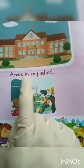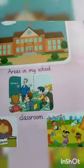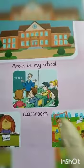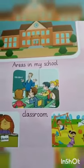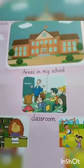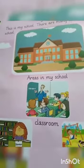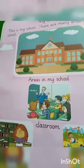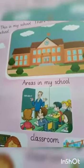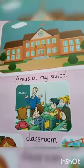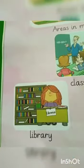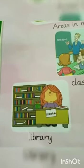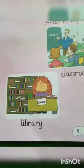Now we'll know the names of the areas in my school. Number one is the classroom. The classroom is the basic, main part of the school — there must be many classrooms in a school. Next is the library.